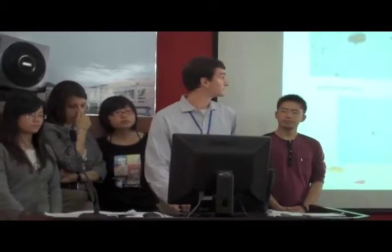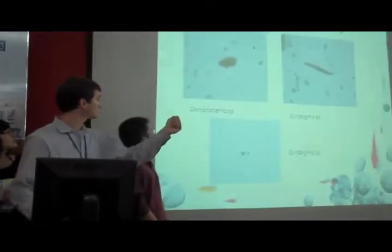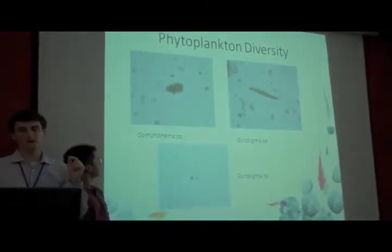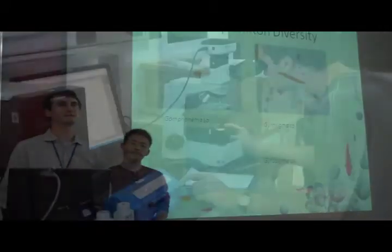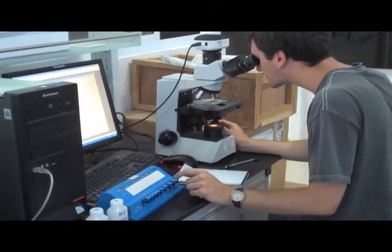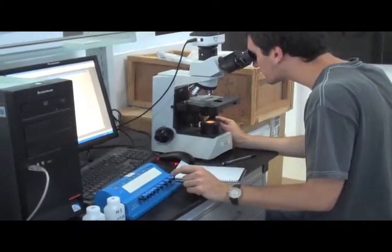With the explosion of nutrients has come also an explosion of phytoplankton, an explosion of algae. Here are our main dominant species of phytoplankton. We have Gomphonema, Gyrosigma sp., and Gyrosigma. The important thing to note here is that none of these phytoplankton from our East Taihu Lake site are blue-green algae. So the dominant form of phytoplankton is not algae at this site.